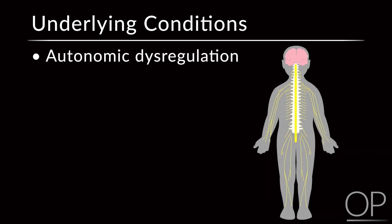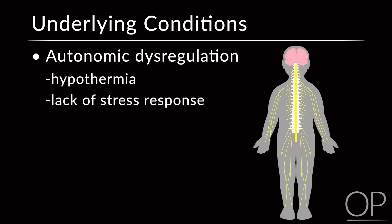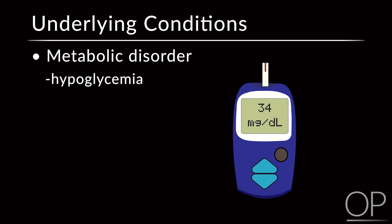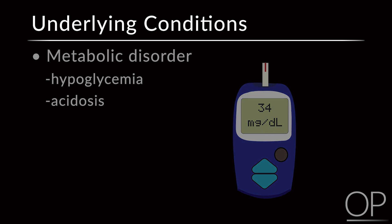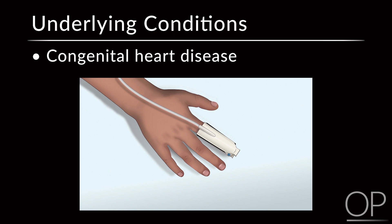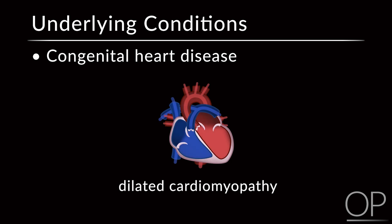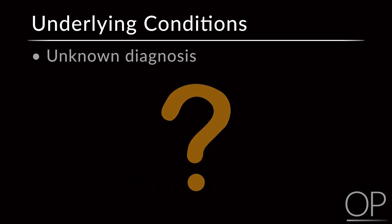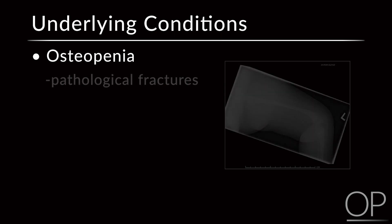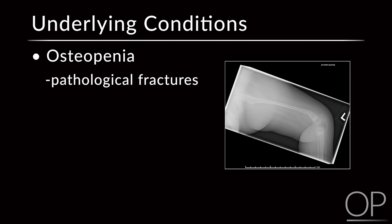Do they have autonomic dysregulation? Hypothermia, lack of a stress response, or simply exposure itself may result in hypoventilation. Do they have a metabolic disorder — are they hypoglycemic or acidotic? Could these impact their level of consciousness, making them breathe very quickly or hypoventilate? Could they have congenital heart disease, where saturations should actually be lower than normal goals? Could they have cardiomyopathies associated with muscular dystrophies? Are they osteopenic — non-ambulatory and vulnerable to pathologic fractures — and therefore in pain, driving tachypnea or respiratory distress?